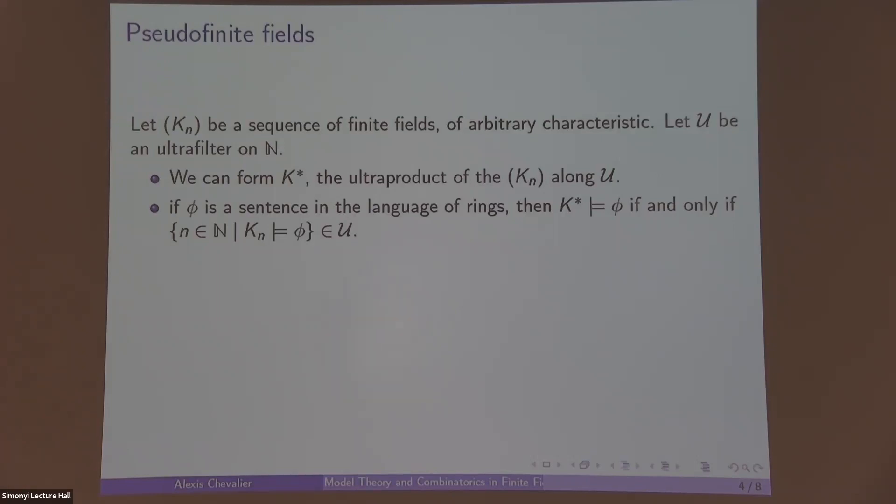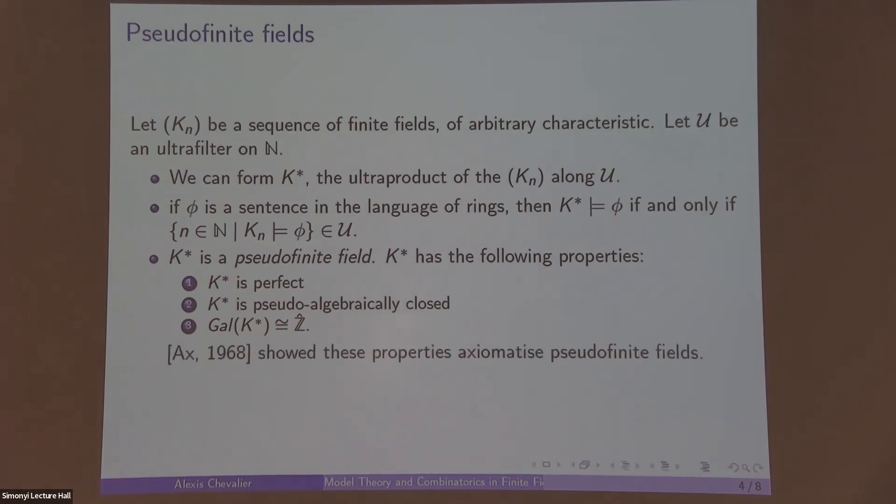We say that K* is a pseudofinite field. The following properties of K* are kind of remarkable, these are important: K* is perfect, K* is pseudo-algebraically closed, and the absolute Galois group of K* is Ẑ, the profinite completion of Z. This is Ax's theorem, which shows that these properties axiomatize pseudofinite fields.